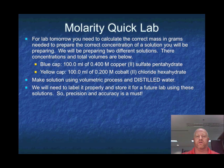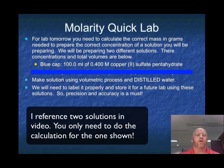Okay guys, we're going to move on to what you're going to be doing tomorrow. For lab tomorrow, you're going to calculate the correct mass in grams needed to prepare the correct concentration of a solution you'll be working with. We're going to have a volumetric flask that has a blue cap on it, and we want 100 milliliters of a 0.40 molar copper 2 sulfate pentahydrate solution. So for both of these solutions, you need to calculate now how many grams of copper 2 sulfate pentahydrate you're going to be putting in. Tomorrow, we're going to make the solution using a volumetric process, so make sure you're prepared for that, and we'll be using distilled water because we do not want tap water because that will contain contaminants.